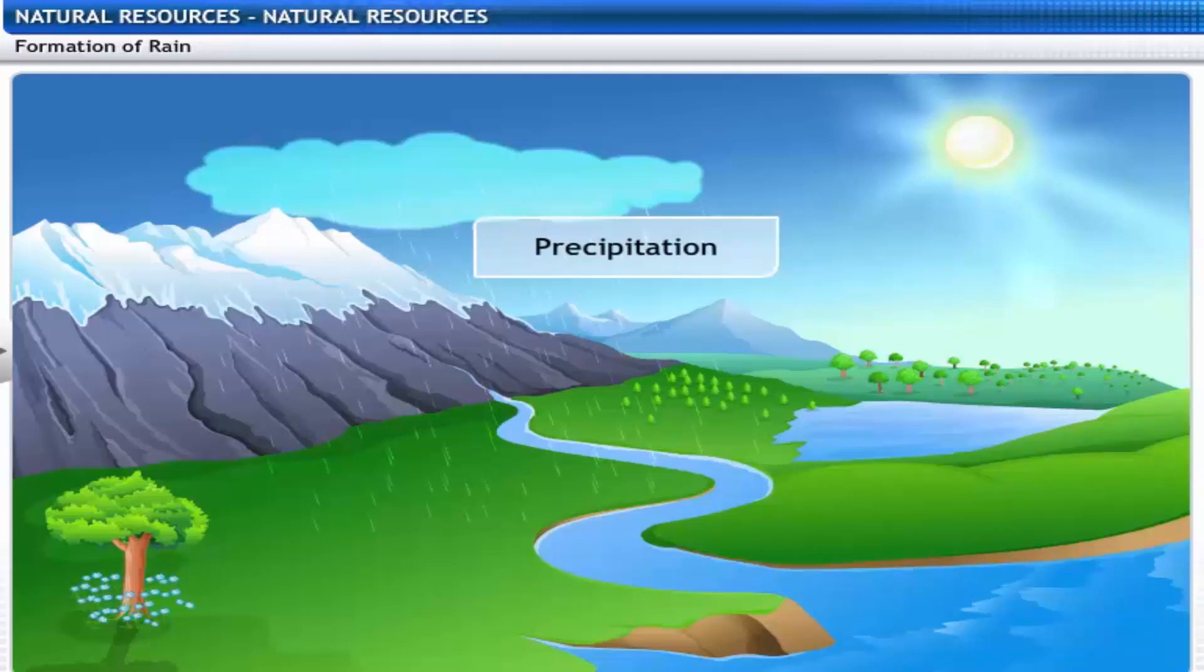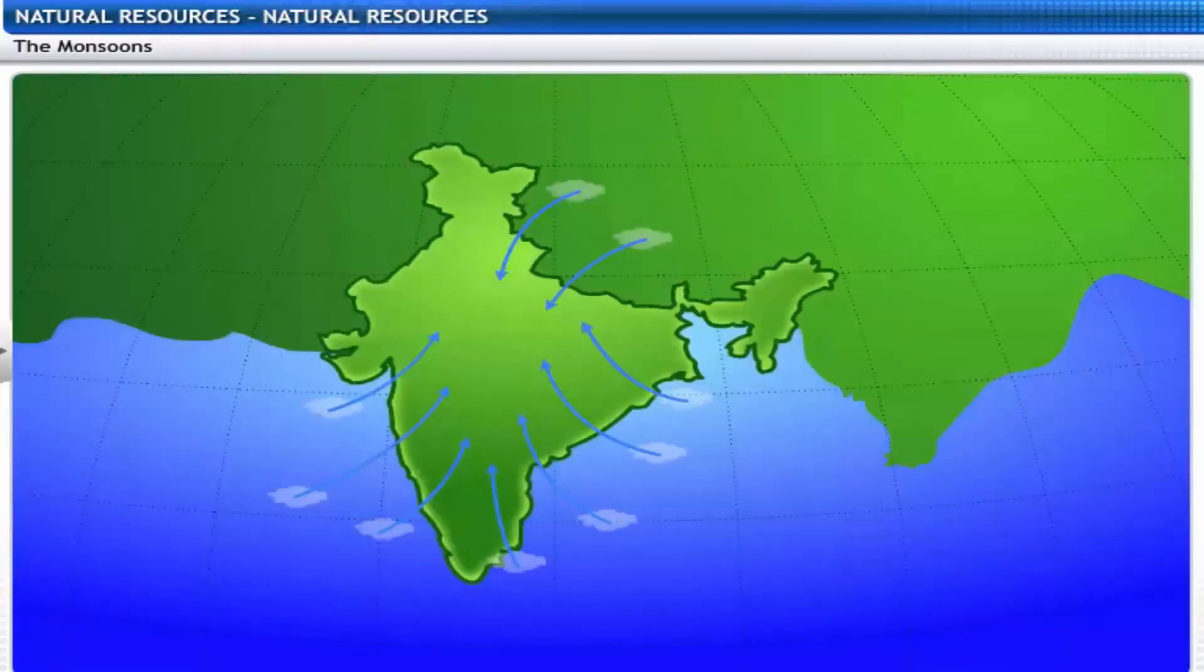This process is called precipitation. When the temperature is low, precipitation may occur in the form of snow, sleet or hail. In many parts of India, rain is brought by seasonal winds called monsoons.